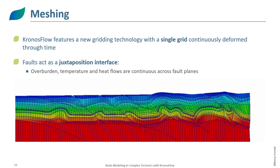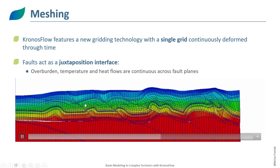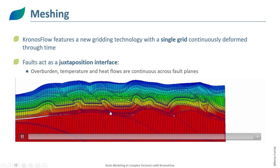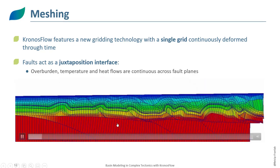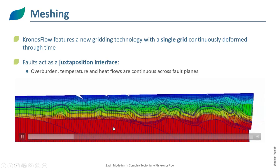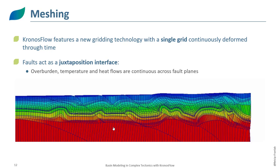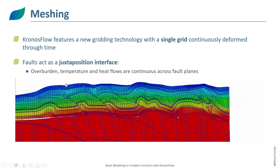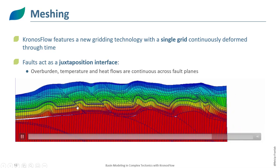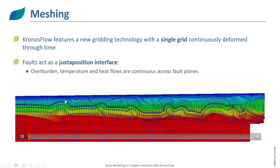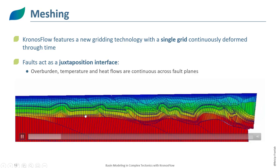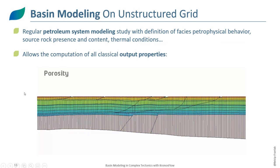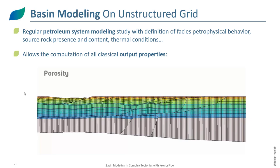Once the restoration is performed, we compute a mesh using a new gridding technology that creates a single grid continuously deformed through time. Every cell of the mesh can be tracked and followed through time — there is no remeshing at every step. The faults only act as juxtaposition interfaces, meaning properties like overburden, temperature, and heat flow are continuous across the fault plane, both laterally and through time.